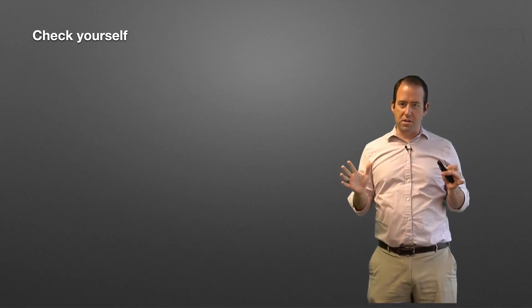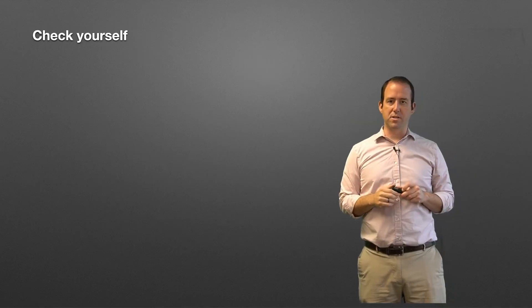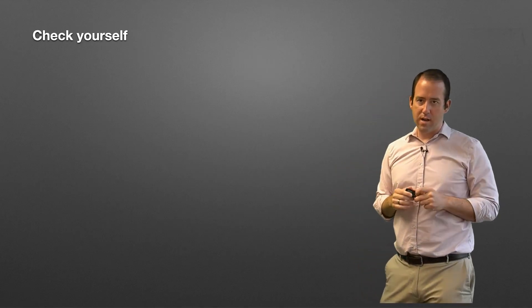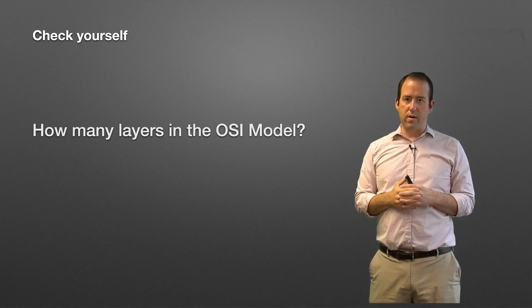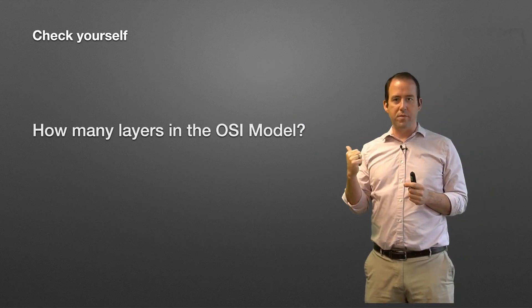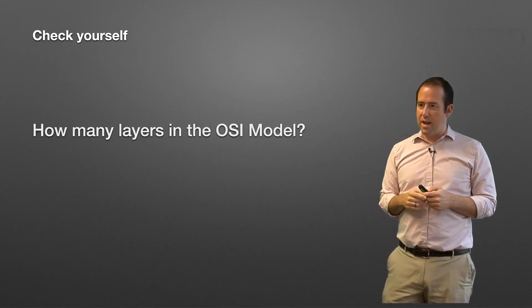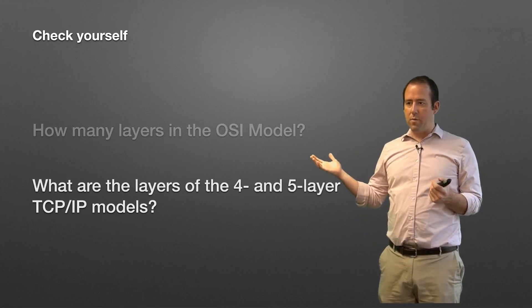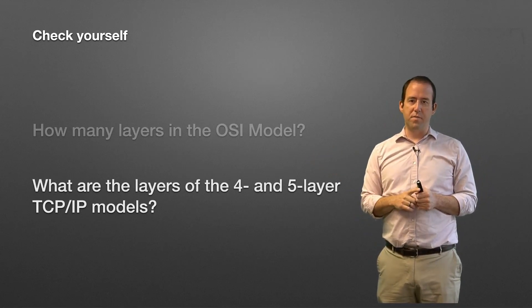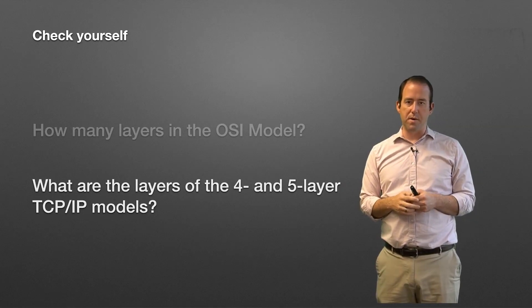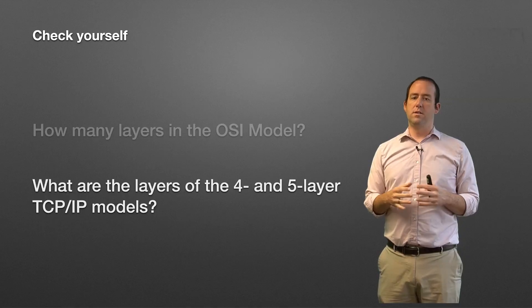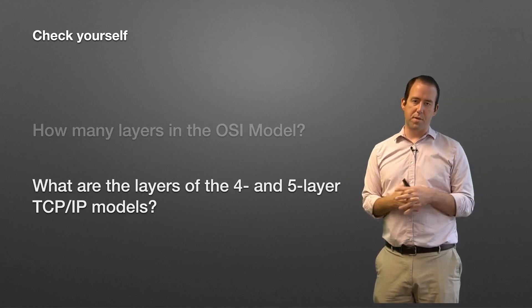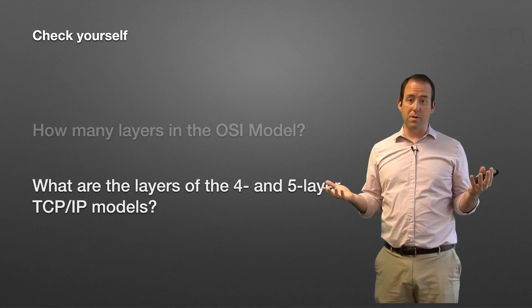So before we go, I want you to do a little bit of mental checks. What have you learned here? We've learned how many layers are there in the OSI model. If you forgot, go back and check again. And finally, what are the layers of the four and the five-layer TCP/IP models? Both of these we're going to talk about, you're going to hear about, so it's worth knowing what both of those are. And that is what network models is all about.